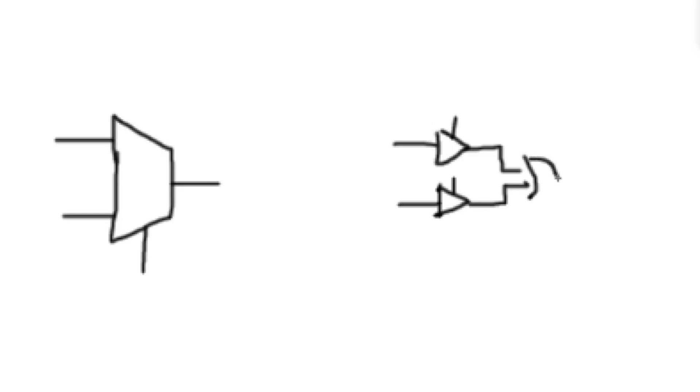If you recall back to the earlier tutorials in this playlist, a multiplexer is basically just a group of buffers tied to an OR gate. In this case, we're going to be working with a two-input multiplexer just to keep things simple. We'll also cover four and eight-input multiplexers, and the rest is basically just scaling it up.